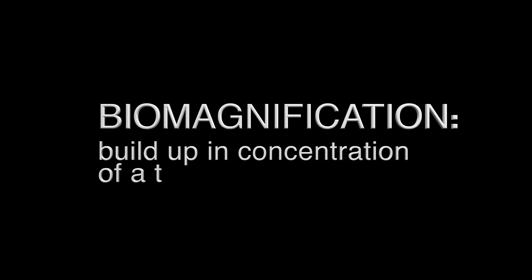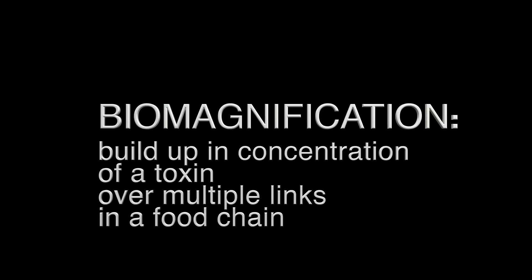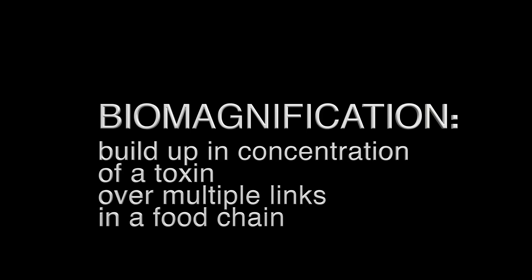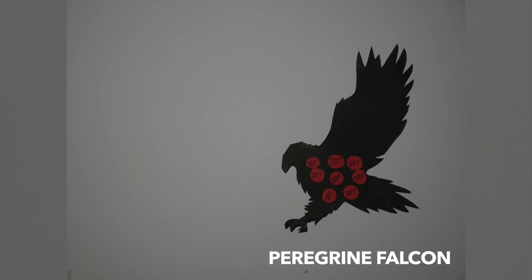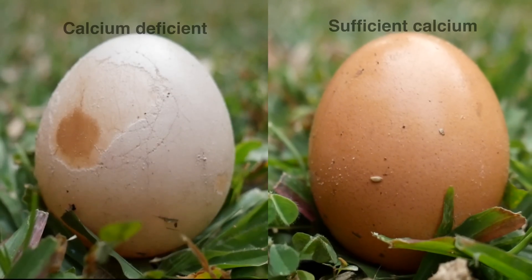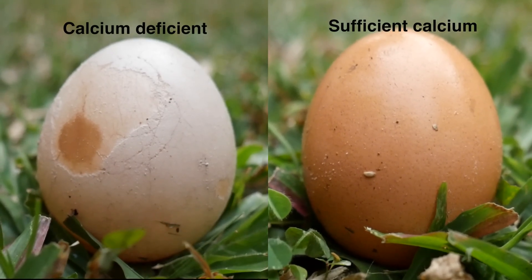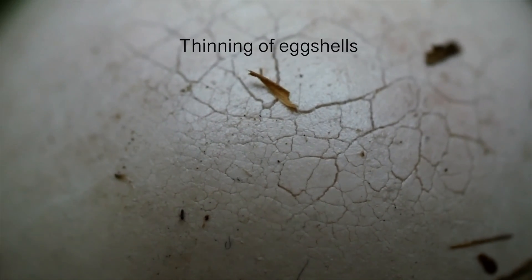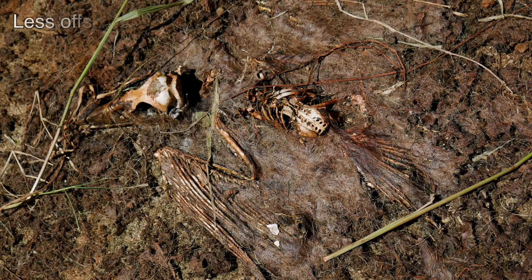This build-up in concentration of a toxic chemical over multiple links in the food chain is called biomagnification. Due to the consumption of DDT, high concentrations of this toxin prevented normal calcium production in peregrine falcons. This decreased the reproductive output of the falcons as it caused a thinning of their eggshells, meaning they produced less offspring and experienced a decline in their population.